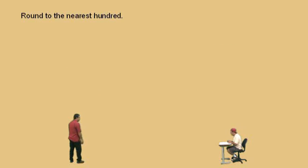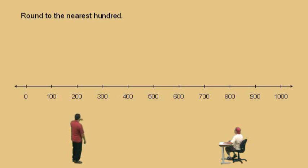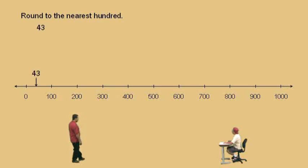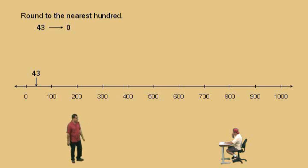Again, we're going to round using a number line, but we're going to round to the nearest hundred, Charlie. Here's a new scale — our number line is broken up into increments of a hundred, and we're going from zero to a thousand. So, 43 — which hundred is it closest to, Charlie? The zero, that's right. Now, if it was a 50, remember, 50 would be right in the middle, and so a 50 would round to the hundred, but anything less than 50 will round to the zero.